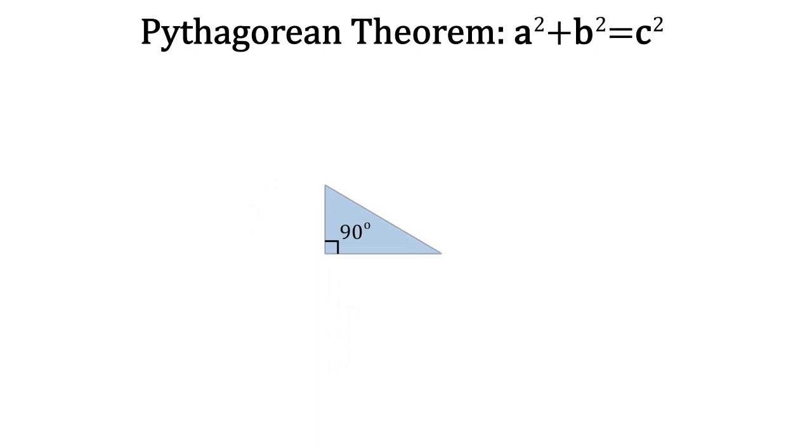The Pythagorean theorem applies to right triangles like this one. It states that a squared plus b squared is equal to c squared, where a and b are the lengths of these two sides coming from the right angle, and c is this other one, also called the hypotenuse.